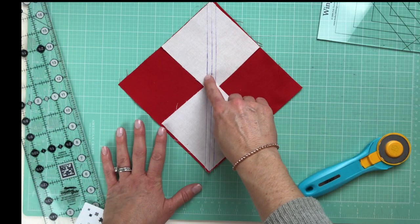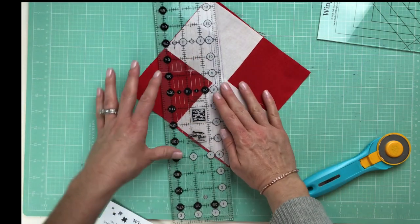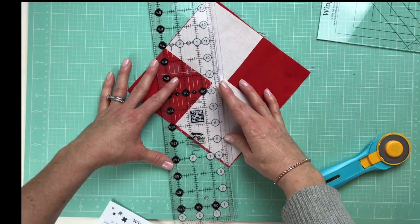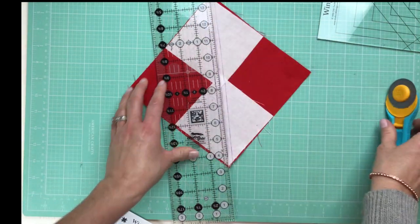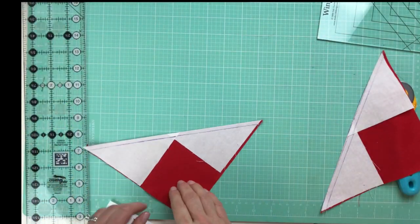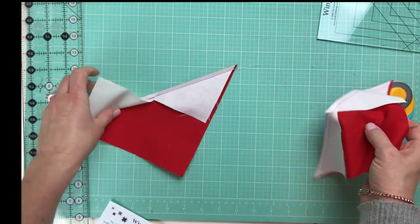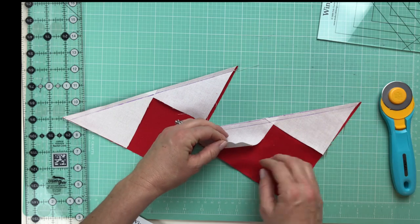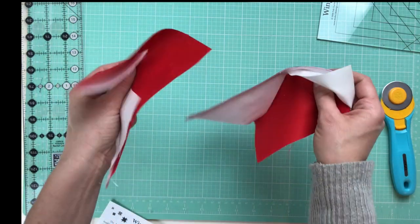All right, so I've sewn my two seams on either side of the cutting line, and now I'm going to make a quick diagonal cut from one end to the other. And I'm going to press my little fox ears up, and in the wing clipper method, it mentions to press to the small side of the triangles, no matter whether you're dark or light.